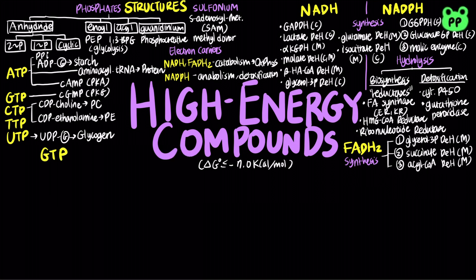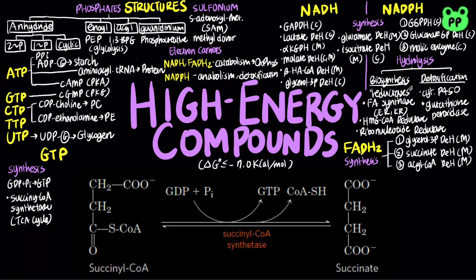GTP is another high-energy compound that is important in many biochemical reactions. Synthesis of GTP from GDP and inorganic phosphate is catalyzed by succinyl-CoA synthetase from the TCA cycle.